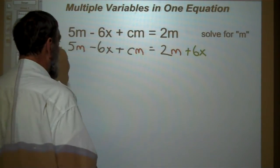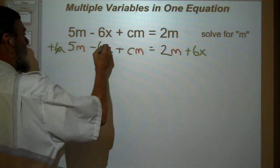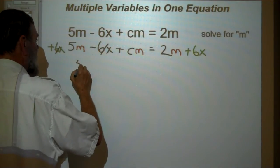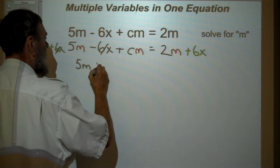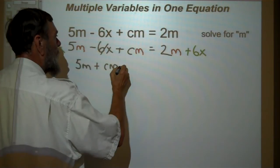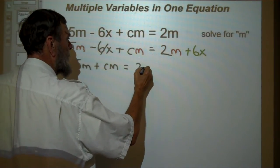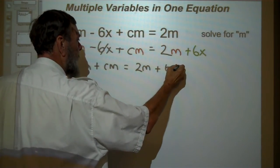When we do that, what do we get? They cancel over here, and now we have 5m plus cm equals 2m plus 6x.